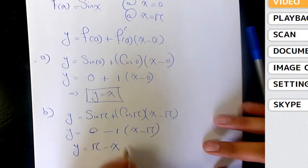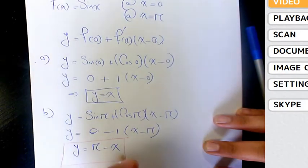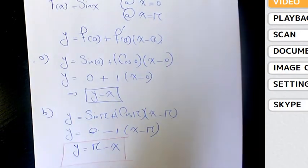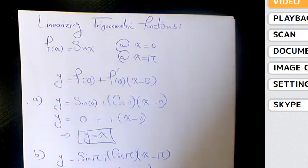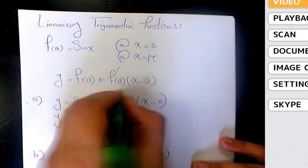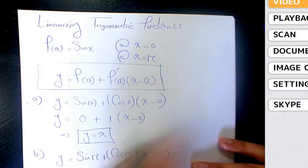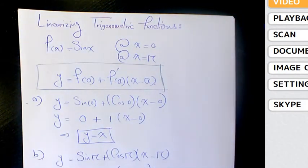So as you see here, the approximation of the same function at different points is going to be different. That's how we linearize trigonometric functions using this general formula.